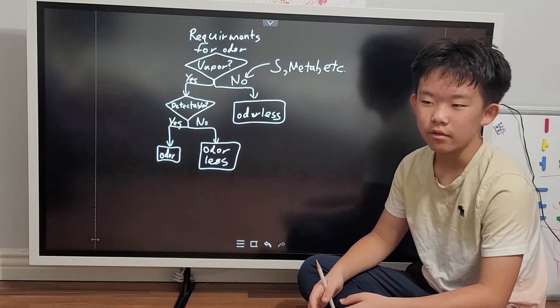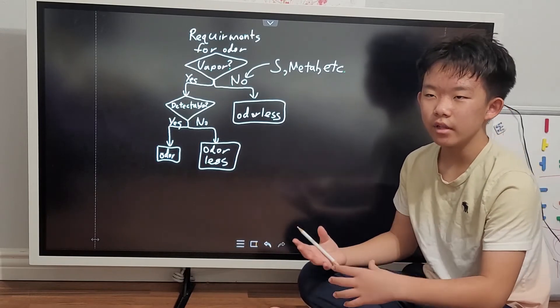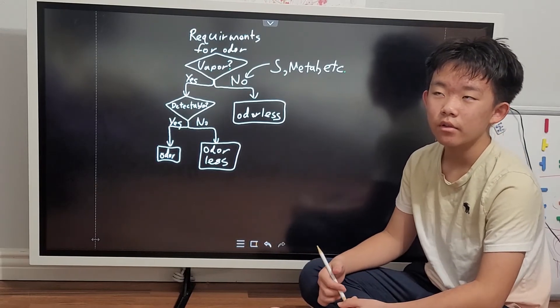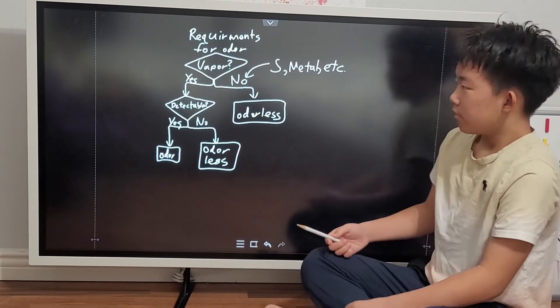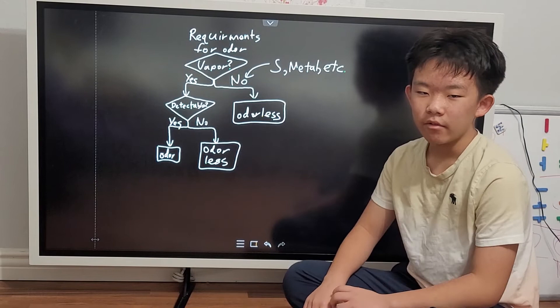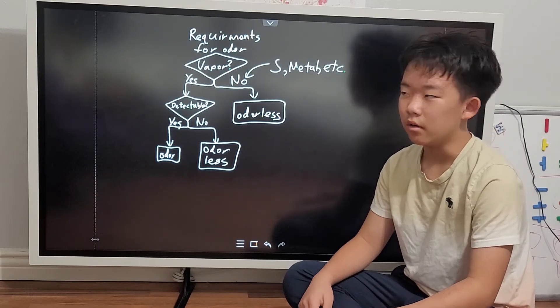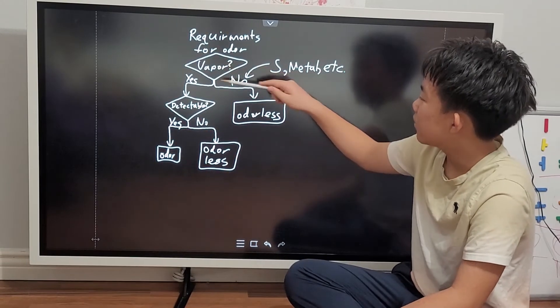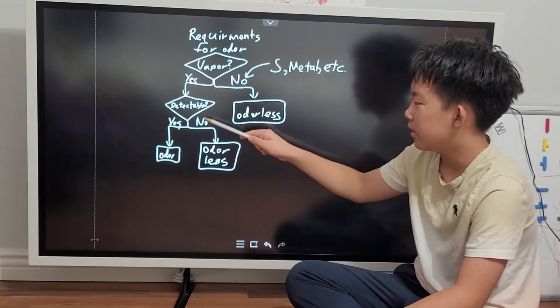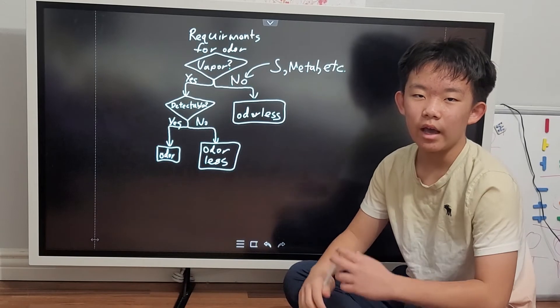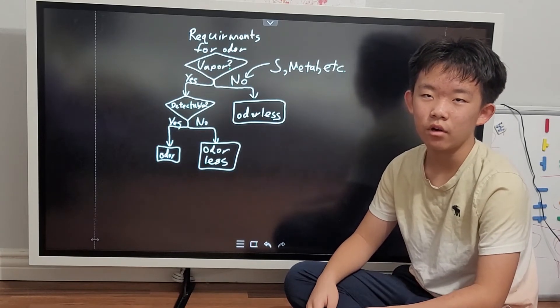But then you might wonder, what if it did release vapor? Well, then you're going to go to the second question. For example, if you took something very volatile like alcohol, then you'd say, does it release any vapor? Yes. Does it release a detectable amount? Yes. This is why alcohols have a very strong odor.